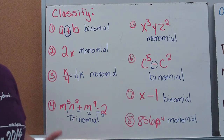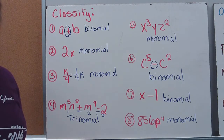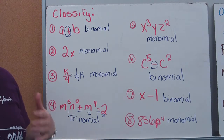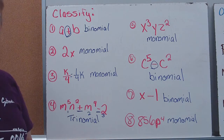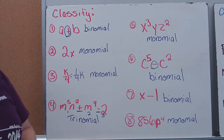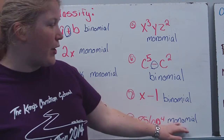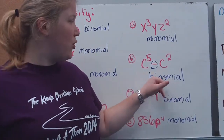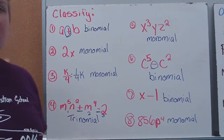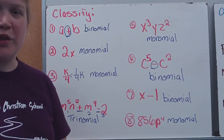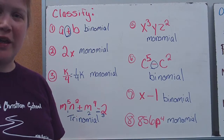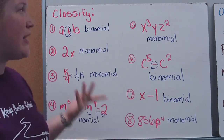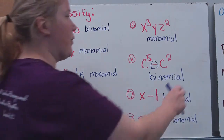The difference between monomial, binomial, and trinomial is just the number of terms. You're looking for addition and subtraction signs. And the prefixes — mono means 1, bi means 2, tri means 3. So if it has one term, it's a monomial. If it has two terms, it's a binomial. If it has three terms, it's a trinomial.